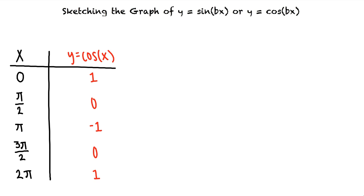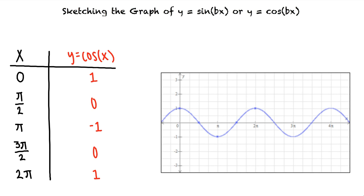When we graph this we see that the key points correspond to the x-intercepts, minima and maxima within one cycle of y equals cosine x.